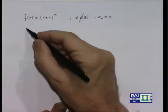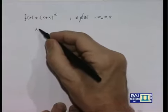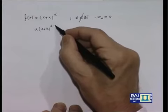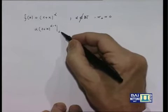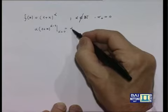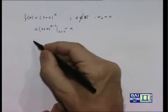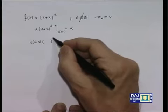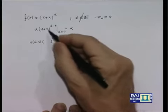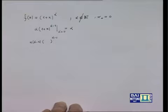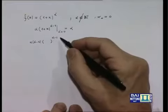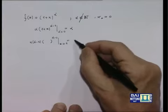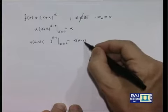La derivata prima diventa alfa(1 + x)^(α-1); calcolata per x uguale a 0 trovo alfa. La derivata seconda è alfa(α-1)(1 + x)^(α-2); quando calcolo per x uguale a 0, vale sempre 1, quindi trovo alfa(α-1).